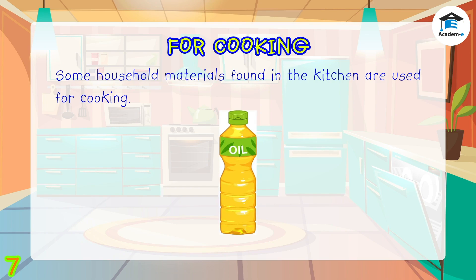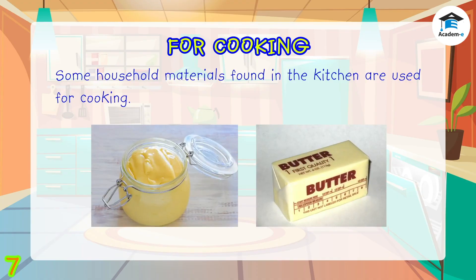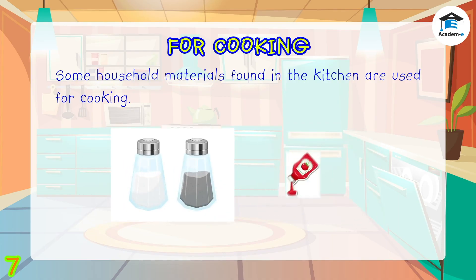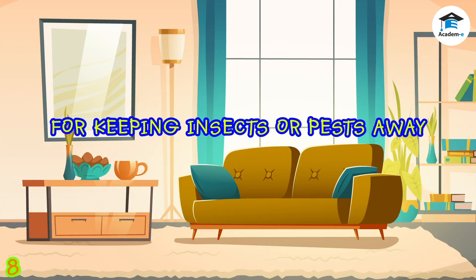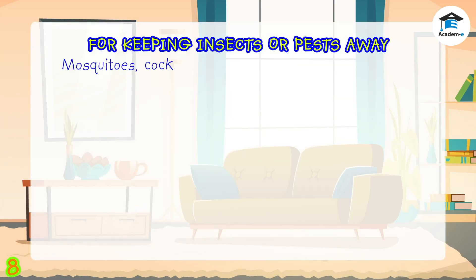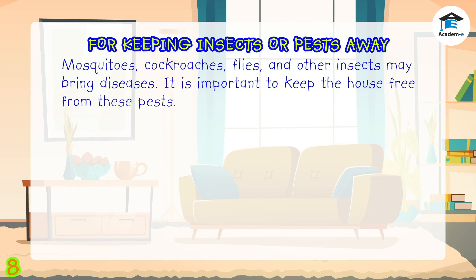Most of the food you eat is either fried or sautéed in cooking oil. Other materials used for cooking are mayonnaise and butter, which are commonly used as spread for sandwiches. Salt, pepper, and ketchup are examples of condiments that are used to make food tasty.